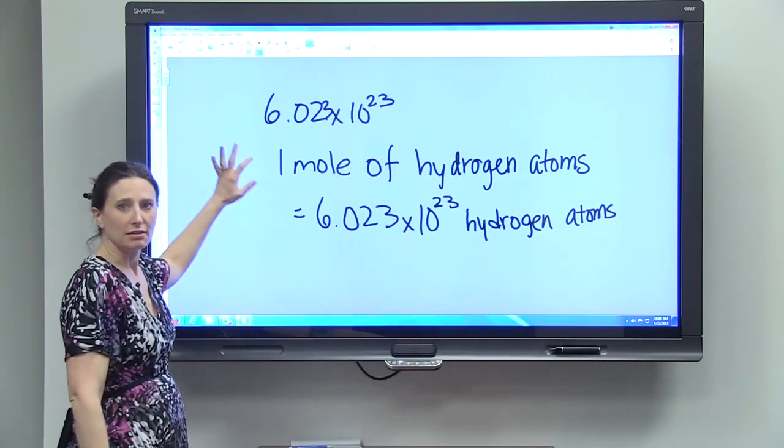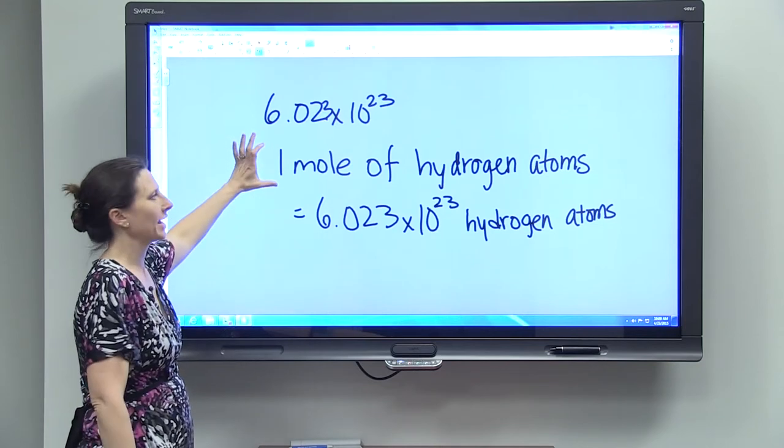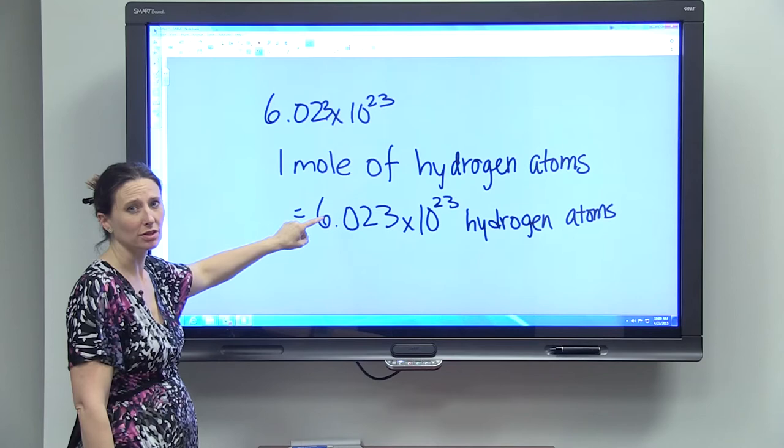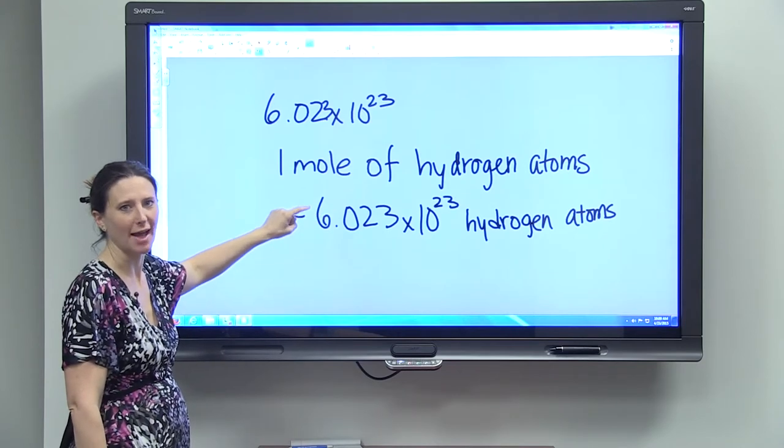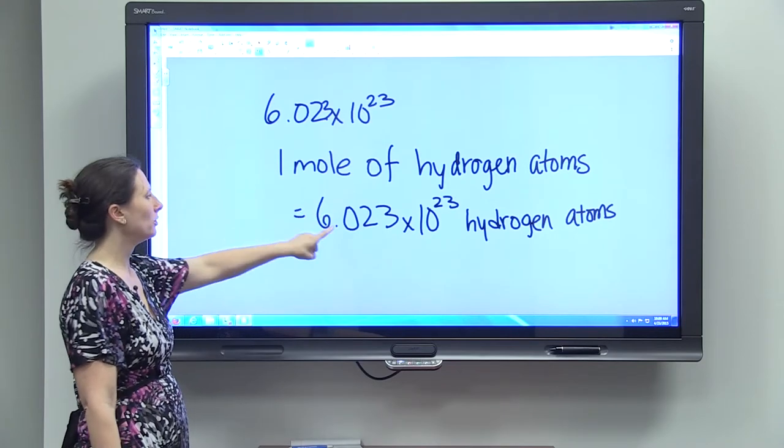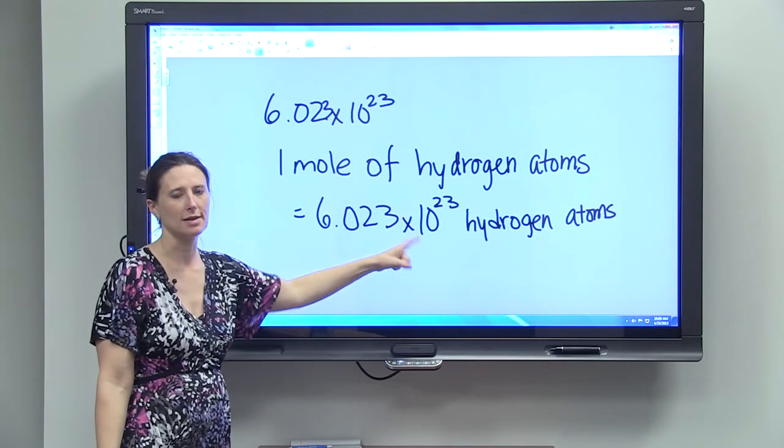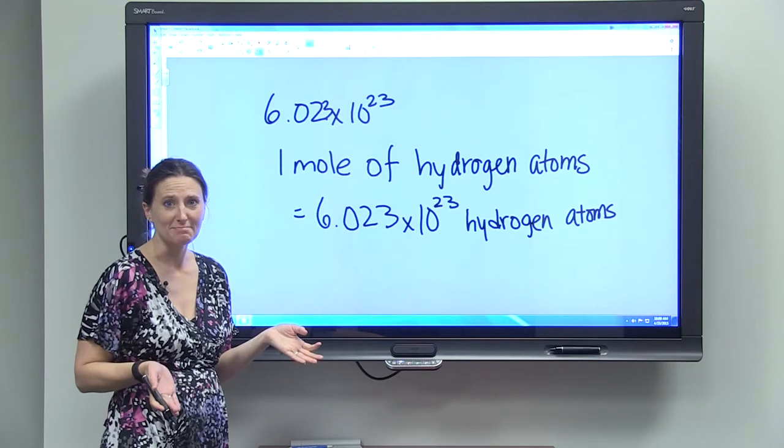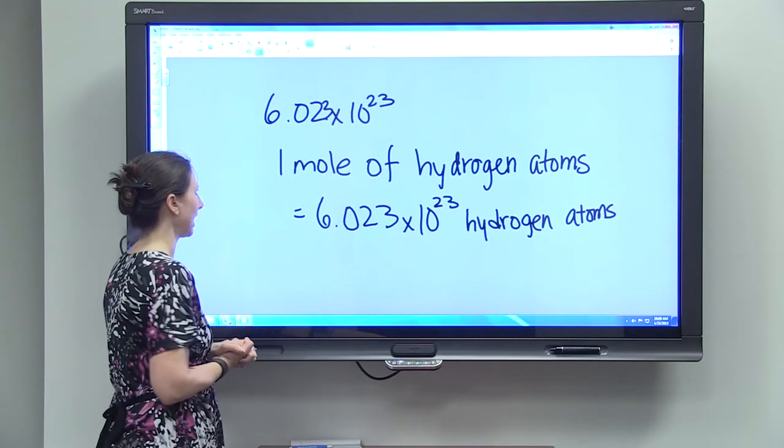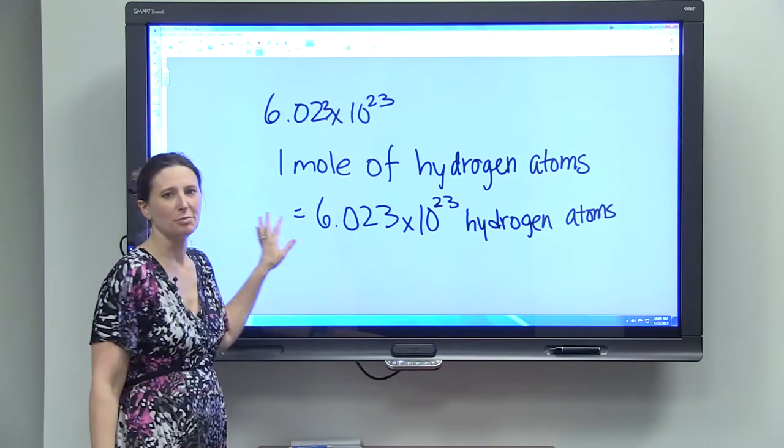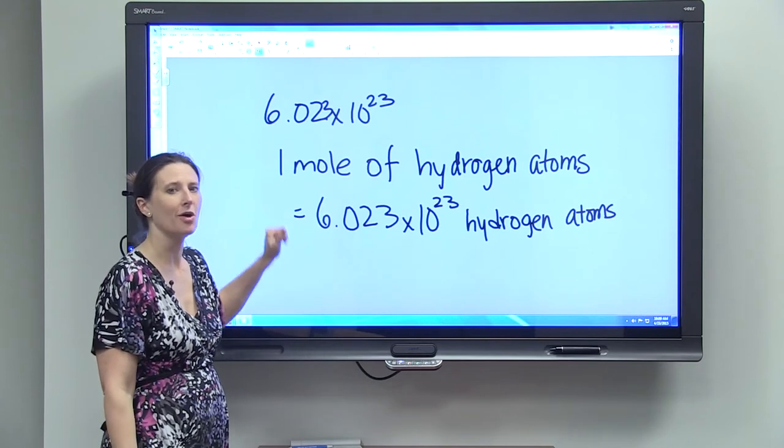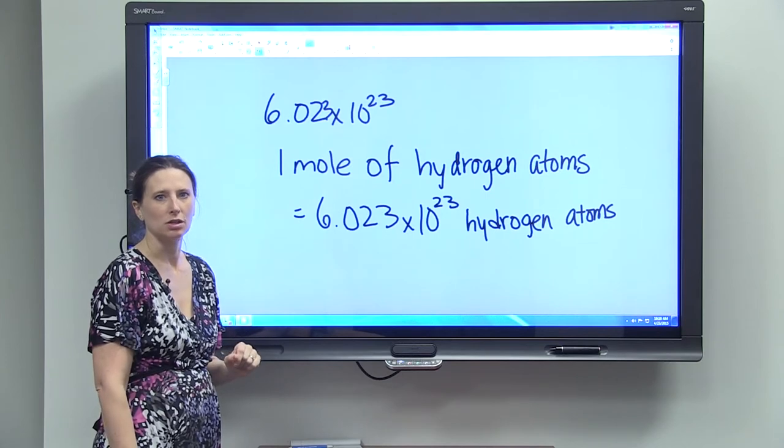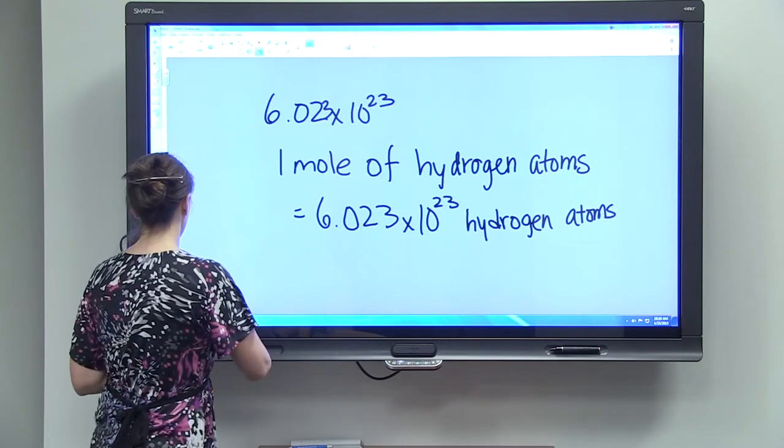And so, if you are measuring out a mole of hydrogen atoms, you could count those hydrogen atoms if you could count them, and you would come up with exactly 6.023 times 10 to the 23rd. It would take you forever to count them, and they're far too small for you to count. But luckily, there's a good way to know exactly how many atoms are in a certain sample of hydrogen.